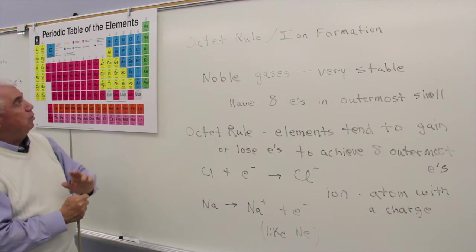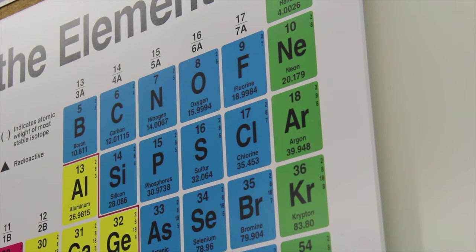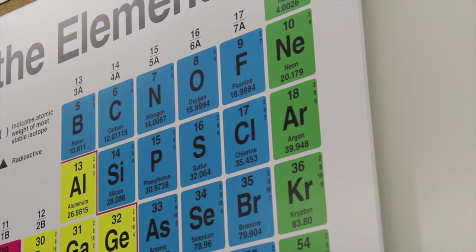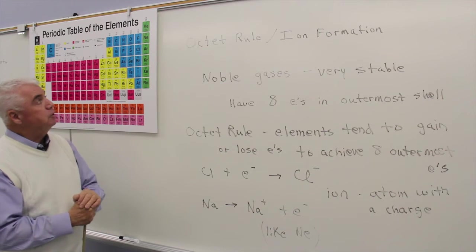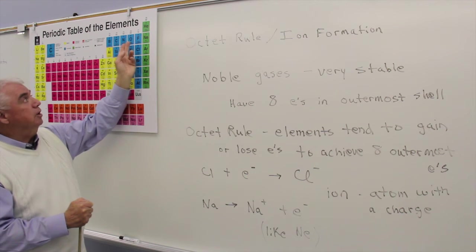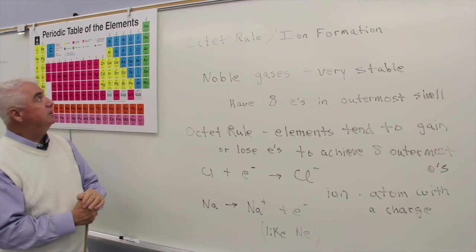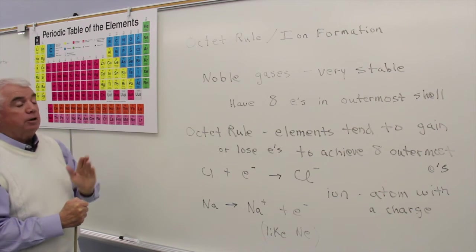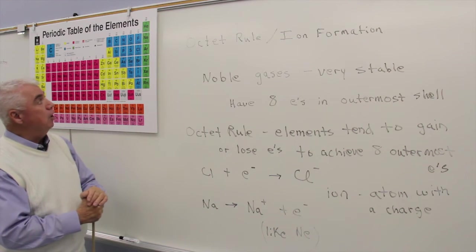Or if we back up one column and look at oxygen. Oxygen is in group 6A. It has six valence electrons. It'd like to have eight. So oxygen in its reactions tends to add two electrons, in other words, to become O2-. And that's true of sulfur and selenium and tellurium, all the elements in that column.